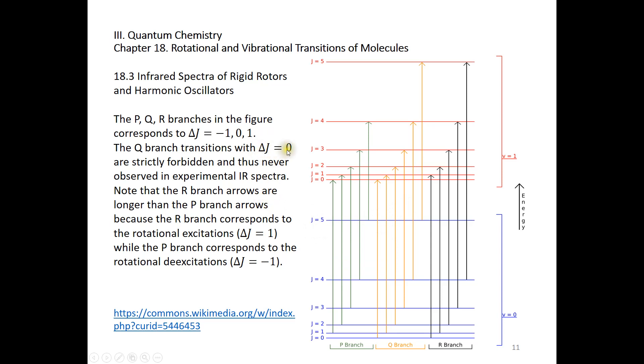Only because delta J equals 0 is strictly forbidden in a photon-induced rotational transition. The R branch arrows are longer than the P branch arrows only because in the R branch we have both vibrational excitation and rotational excitation, so we need more energy. In the P branch, we have vibrational excitation but rotational de-excitation, so less energy is required. The P branch arrows are simply shorter than the R branch arrows.